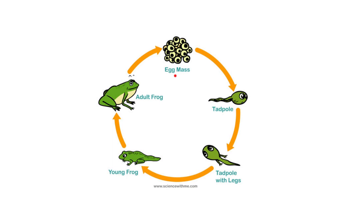We start with an egg. We move to the tadpole, then to the tadpole with legs, then to the young frog, and then to the adult frog.